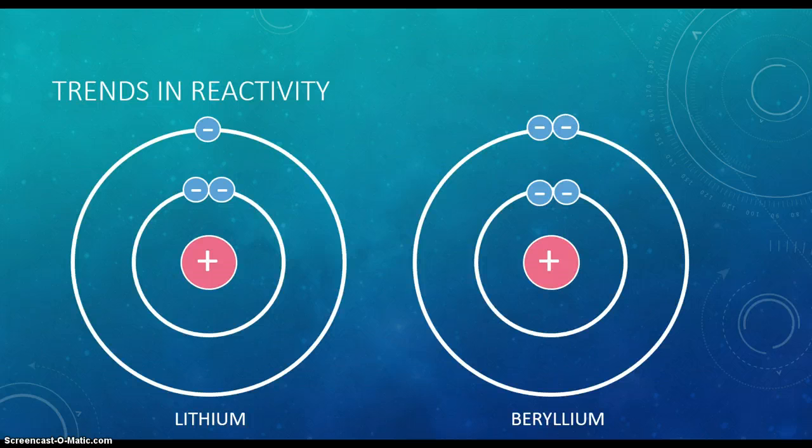Although lithium and beryllium both have the same number of electron shells, a beryllium atom has one extra valence electron. As a result, a greater force of attraction needs to be overcome, so beryllium reacts less readily than lithium.